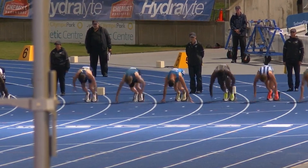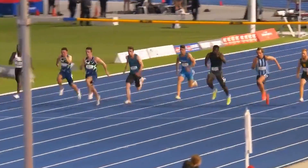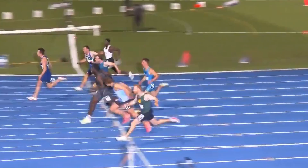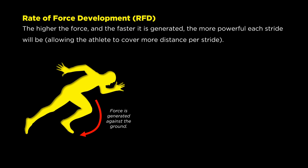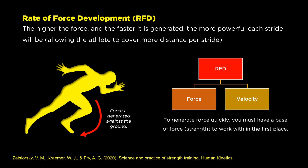Here is why the argument is flawed. Take a sprinter as an example. Although we often say that a sprinter is fast, focusing on their velocity, in reality their performance is largely a measure of their rate of force development, not velocity as an isolated component. This is because each stride they take generates force against the ground which propels them forward. Therefore, it is the rate at which they can develop this force that truly matters, not just raw velocity. And in order to be able to generate force quickly, you must have a base of force production to work with in the first place.